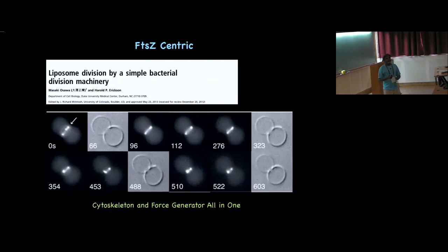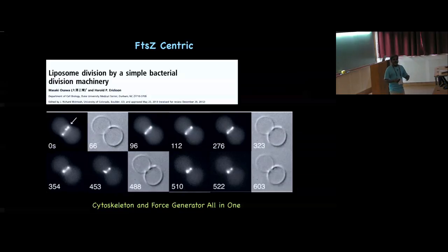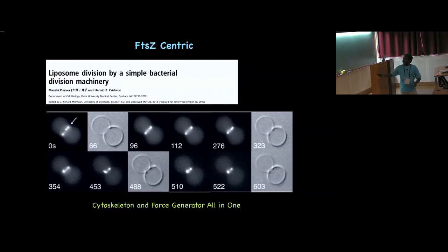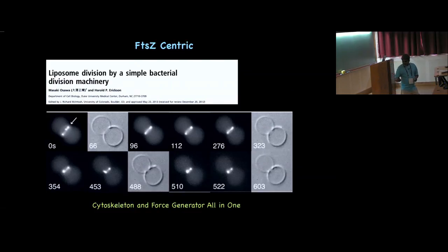Coming back to the prokaryote and FtsZ: there are many views about how FtsZ can constrict membranes. One is the FtsZ-centric view that FtsZ is the all-powerful motor, force generator, and cytoskeleton. This idea was proposed by Erickson, who reconstituted FtsZ along with the membrane anchor FtsA into liposomes. They assembled into ring-like structures and over time the ring constricted, closing a gap between two vesicles. So it seems like FtsZ and FtsA are sufficient to invaginate membranes and contribute to division.